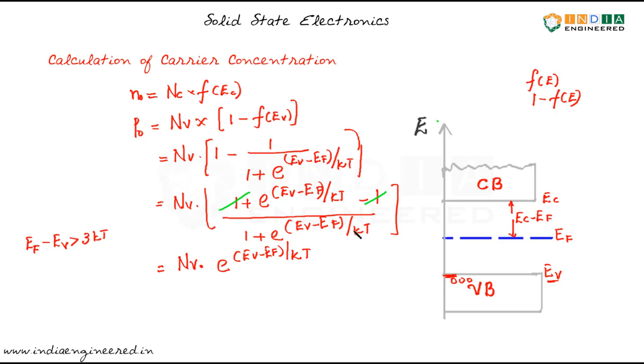e power Ev minus Ef by kt term in the denominator because this term, if it is satisfying this condition, it will be far less than e power minus 3. So we can neglect that term compared to 1.